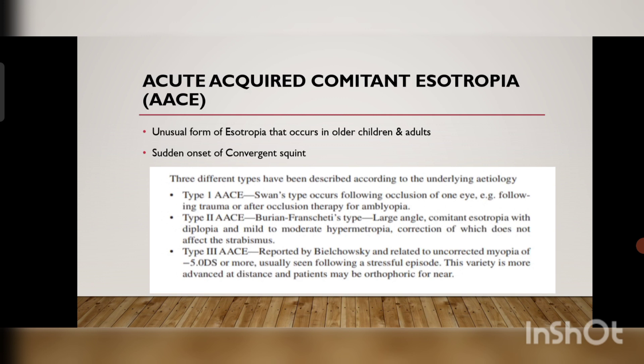Coming to the types of AAC — AAC can occur for different reasons. Type 1 AAC is Swan's type. It occurs following occlusion therapy. If the child was previously having amblyopia and the good eye was patched for a very long duration, the child can develop Type 1 AAC.